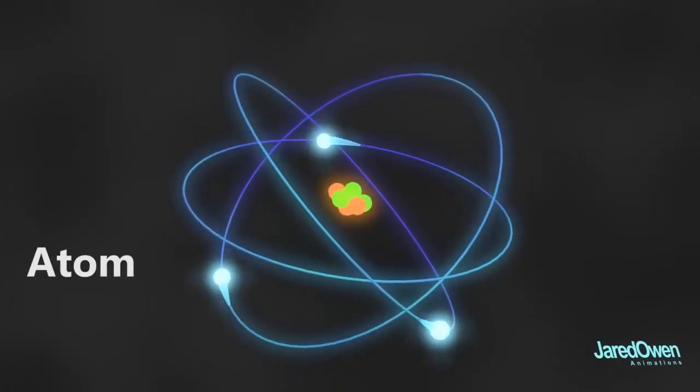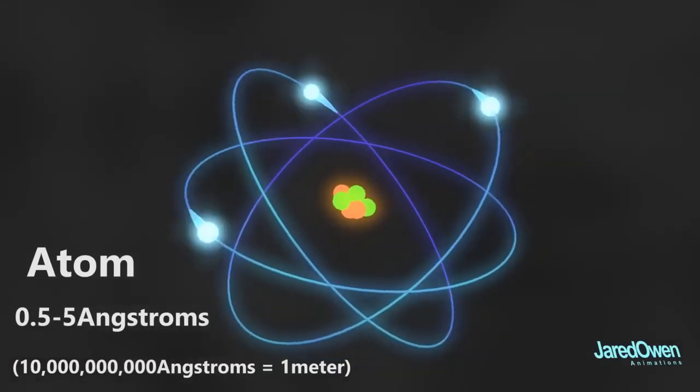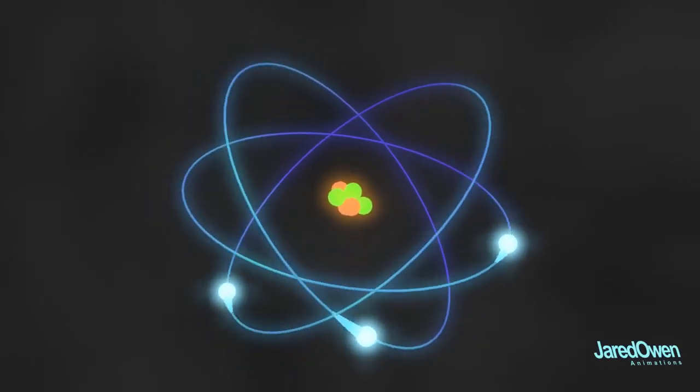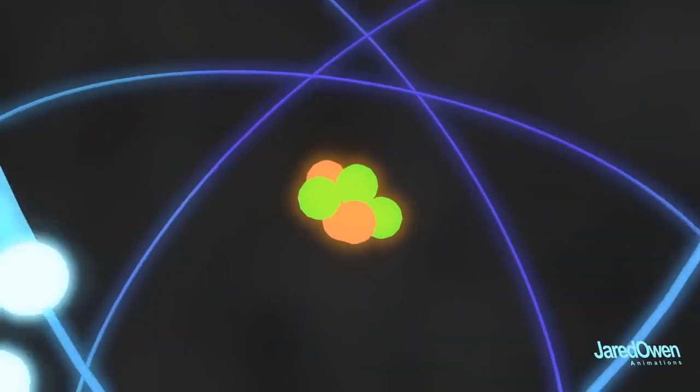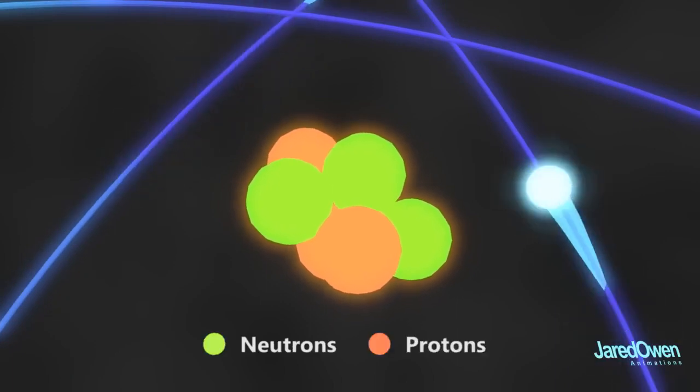The size of an atom is only a few angstroms. There are 10 billion angstroms in 1 meter. When you think of an atom, you probably picture something like this. On the outside, you've got electrons that have a negative charge. In the middle is the nucleus. It's made of neutrons, which have no charge, and protons, which have a positive charge.